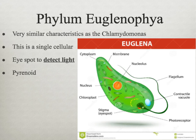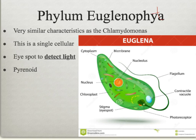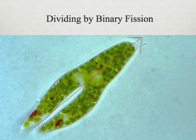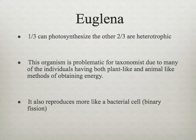One of the last groups is phylum Euglenophyta. They have very similar characteristics to Chlamydomonas — they're single-cellular, they have an eye spot to detect light, and they also have a pyrenoid. These individuals split right down the center by binary fission. There's a problem with Euglena because about a third of them photosynthesize and two-thirds are heterotrophic. That's a problem for taxonomists because they have both plant-like and animal-like methods of obtaining energy. They also reproduce by binary fission, which we see in bacterial cells — so this is really a jack-of-all-trades organism.